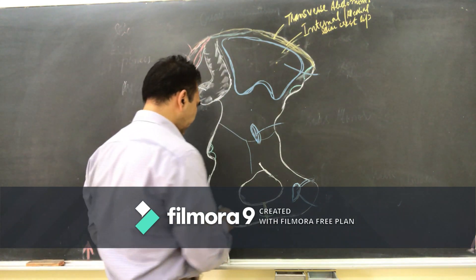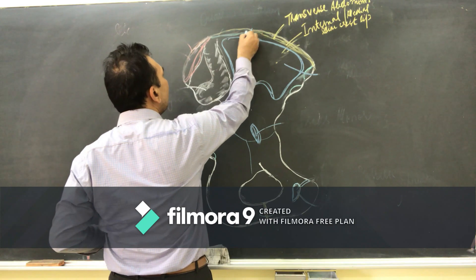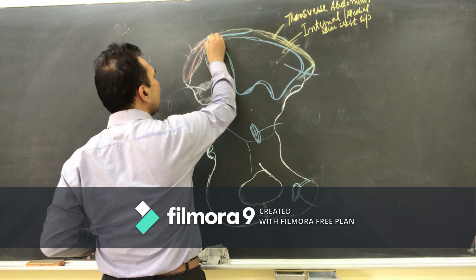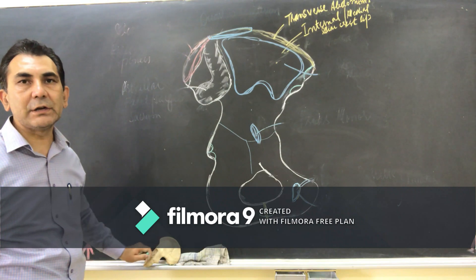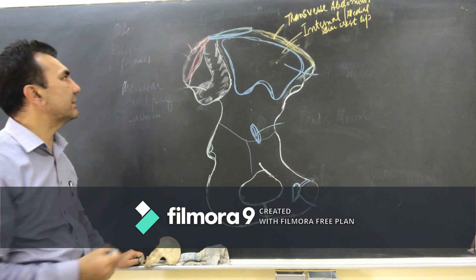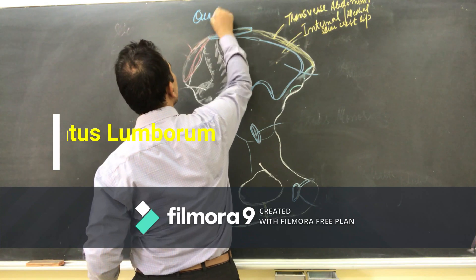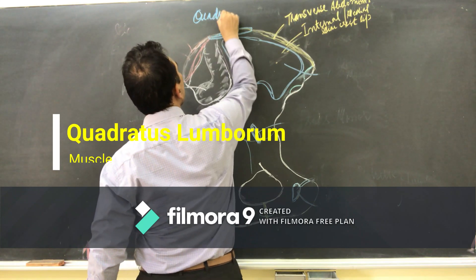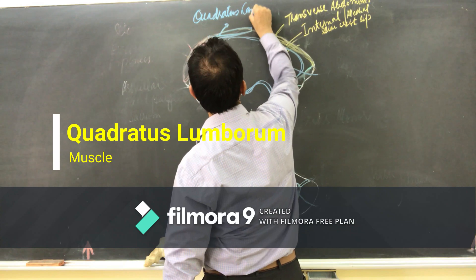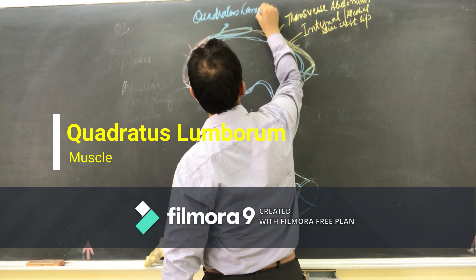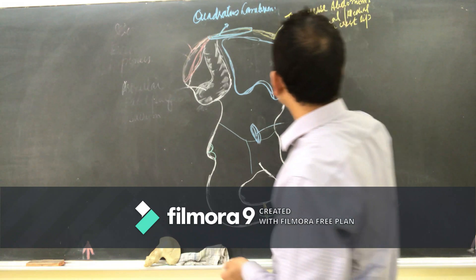The middle portion of the internal lip of the iliac crest is for the attachment of the quadratus lumborum muscle, which is attached in this middle region.